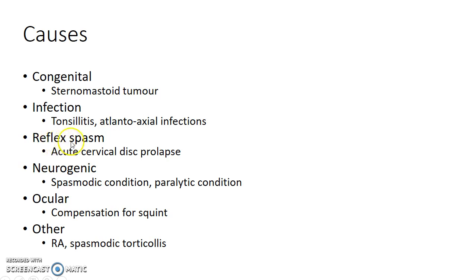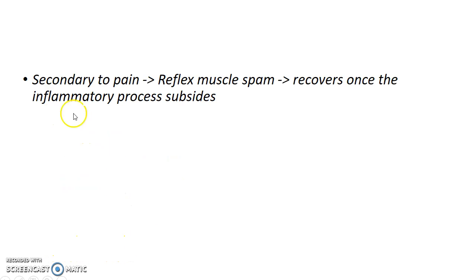Torticollis can be due to reflex spasm in case of acute cervical disc prolapse. It can also be due to neurogenic causes like spasmodic and paralytic conditions. Ocular causes can result in Torticollis as a compensation for squint. Other causes include rheumatoid arthritis and spasmodic Torticollis. Mostly, Torticollis is secondary to pain as a result of reflex muscle spasm, and in these cases it recovers once the inflammatory process subsides.